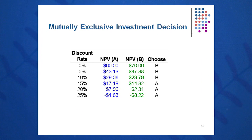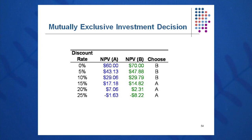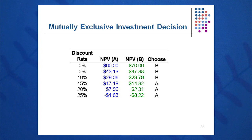From this chart, at low discount rates we choose investment B — it has the higher NPV. It crosses over at about 11.1%, and then at higher discount rates — 11.1% and beyond — we take investment A.